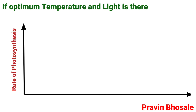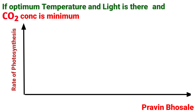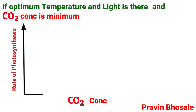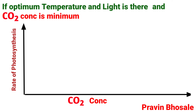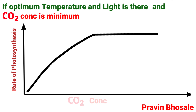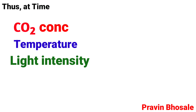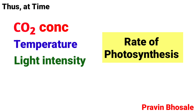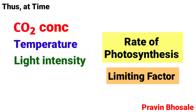Further, if optimum temperature and light are present and carbon dioxide is at a minimum, then the rate of photosynthesis will be decided by carbon dioxide concentration. An increase in carbon dioxide concentration will cause an increase in the rate of photosynthesis, followed by a steady state. Thus, at any one time, only one factor controls the rate and is called the limiting factor.